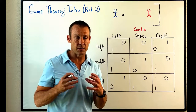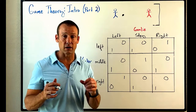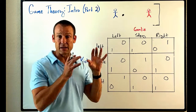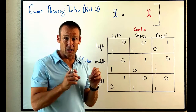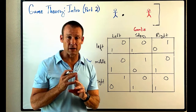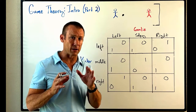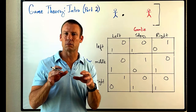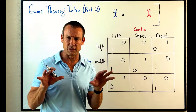There we go — the payoff matrix is filled out. Again, three components to all games: players, strategies, and payoffs. This is a simultaneous play game. In this particular game there's no dominant strategy, which we'll talk about in the next video, and there's no Nash equilibrium, which we'll discuss in a couple of videos from now. But I still want to do a little investigation of this game.